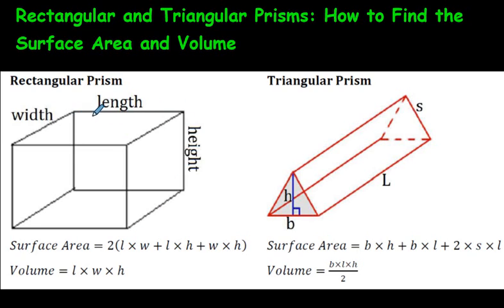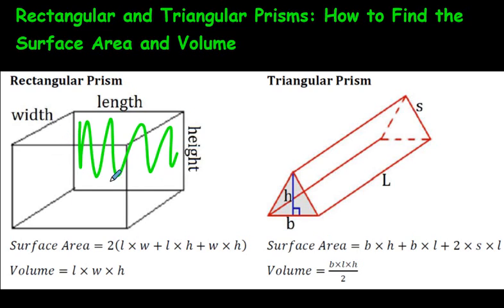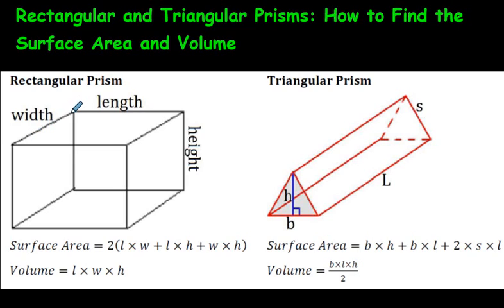Surface area is a little more complicated. Length times width gives us the top, but there are two of those, so there's a 2 on the outside. Then length times height — there are two of those faces as well. And width times height — there are two of those. I sometimes tell people: don't worry about the formula for surface area. Just find the area of each side and add up all your answers. You don't really need to memorize this formula for surface area.